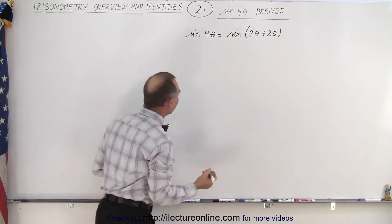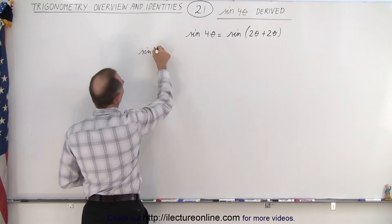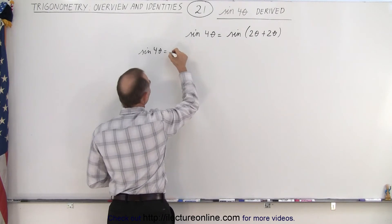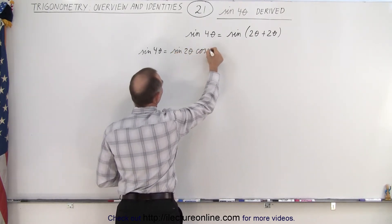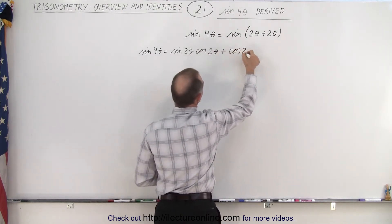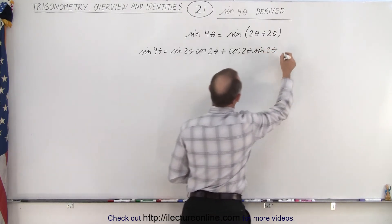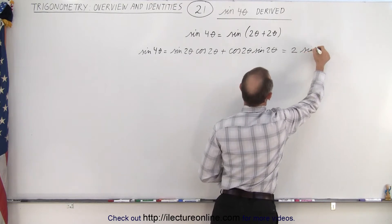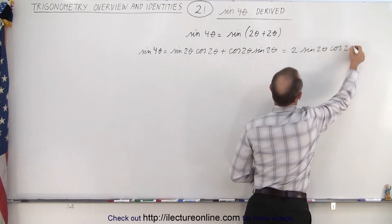When we do that we use the following identity. We can write the sine of 4 theta as equal to the sine of the sum of two angles, which is the sine of the first angle times the cosine of the second angle plus the cosine of the first angle times the sine of the second angle. That means this is equal to 2 times the sine of 2 theta times the cosine of 2 theta.